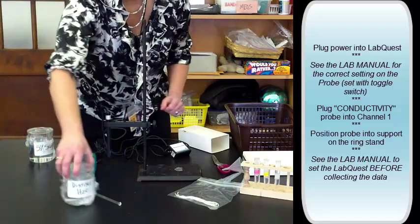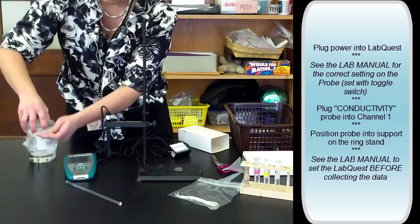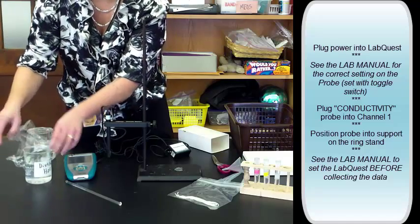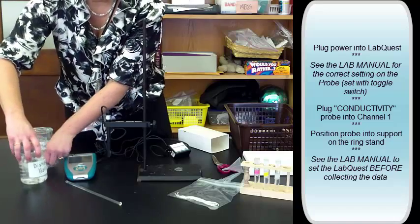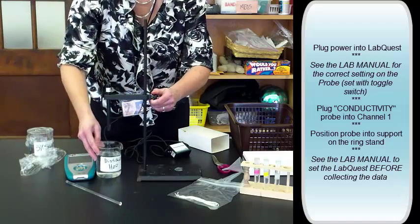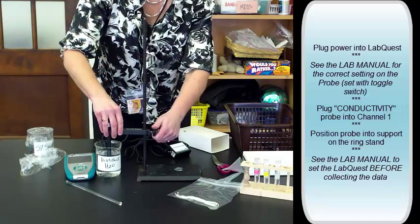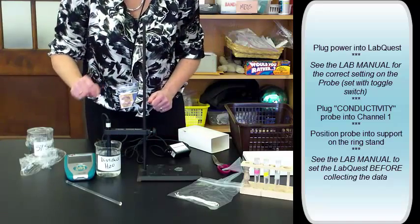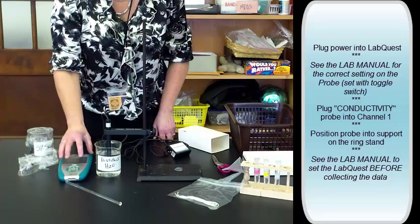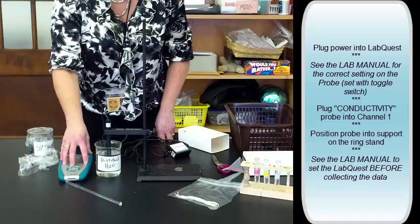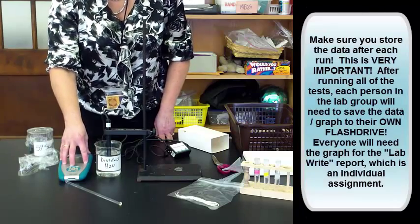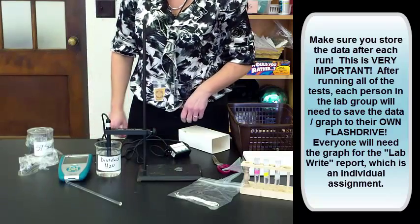Now our first test is we're going to use the distilled water. You will test the conductivity of the distilled water first. It's a matter of putting the probe in, and then you're going to record the value. So make sure that you look at the Lab Manual to see how to set up. You have to set the Quest up, it just doesn't automatically run, because you're going to be taking the graph and putting it on a flash drive to put into your report.